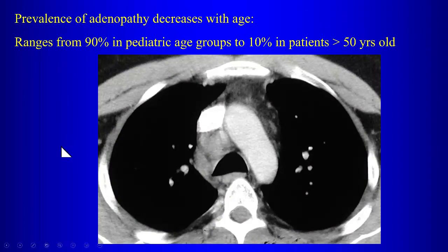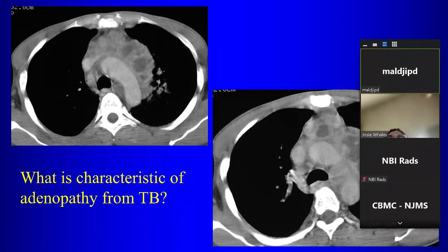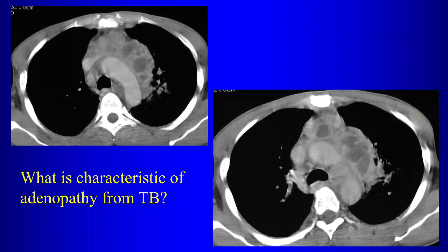The widening of the peritracheal stripe represents right peritracheal lymphadenopathy, which can be seen with tuberculosis. Prevalence of adenopathy decreases with age — younger patients are more likely to have adenopathy. On CT, a characteristic TB appearance of lymphadenopathy shows hypodense, necrotic-appearing nodes with peripheral enhancement and obliteration of the surrounding fat planes.